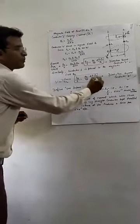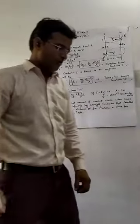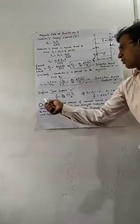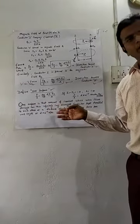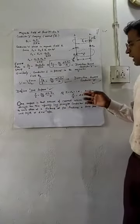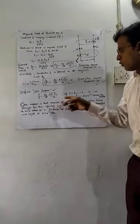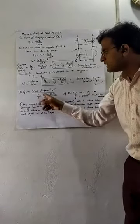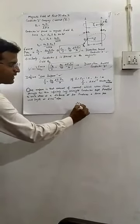From this topic, we can define 1 ampere. Using the formula for force per unit length — (μ₀/4π)(2I1I2/r) — if we put I1 = I2 = 1 ampere and r = 1 meter, the force per unit length equals 2 × 10⁻⁷ N/m (using the value μ₀/4π). This is the definition of 1 ampere.